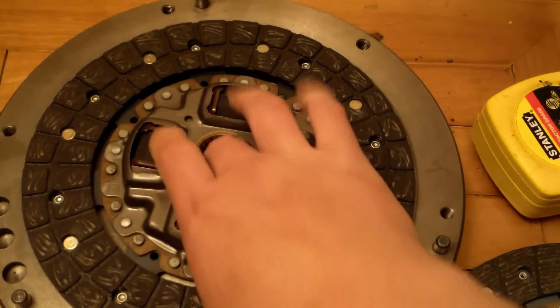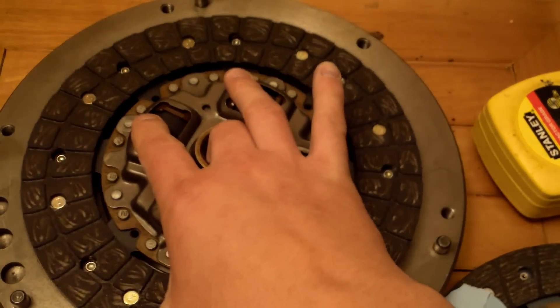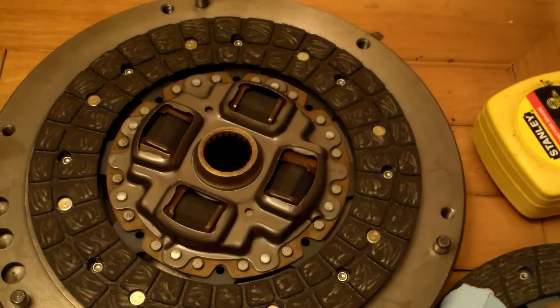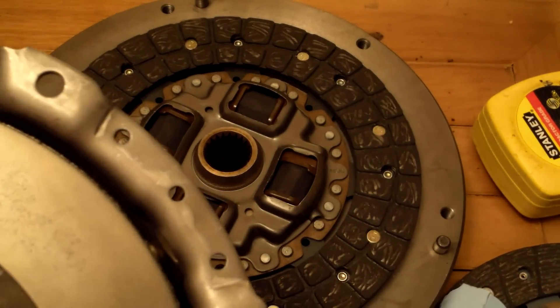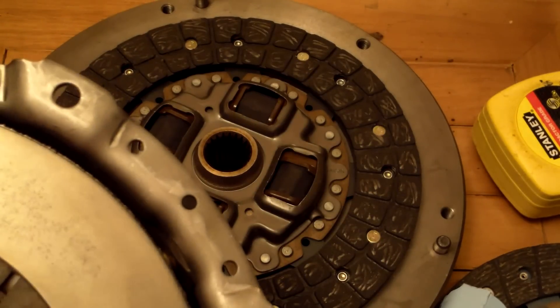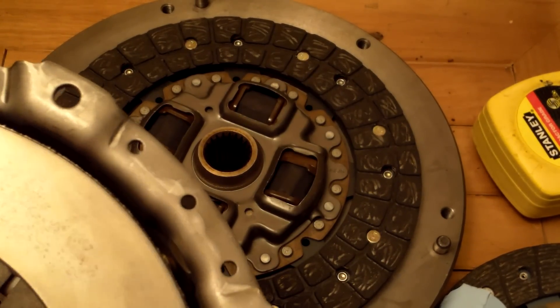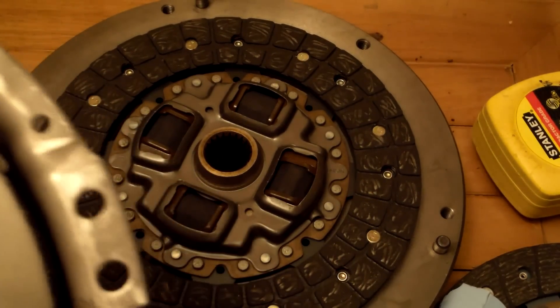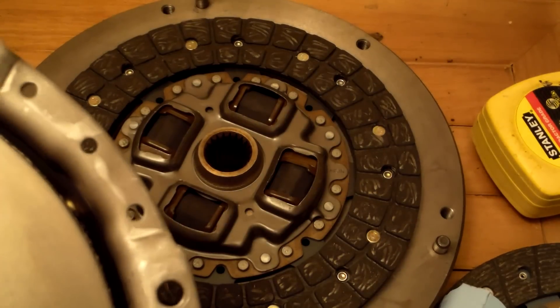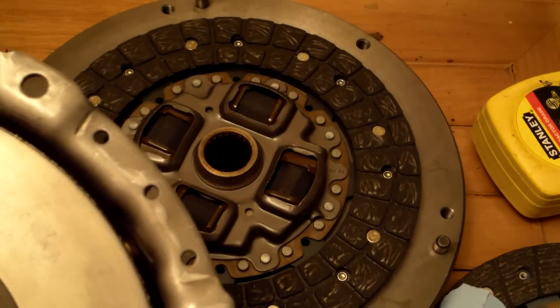The 1ZZ actually uses the same thing. I don't know about the pressure plate. I'm just going to say, if I find more information regarding the 1ZZ pressure plate working with the 7AFE flywheel, I will put that information in the description.